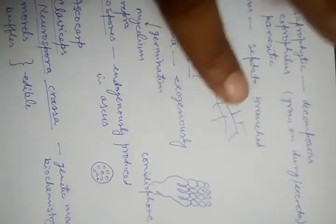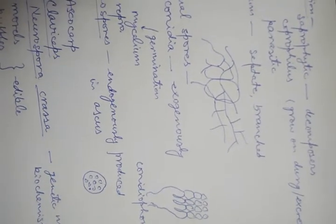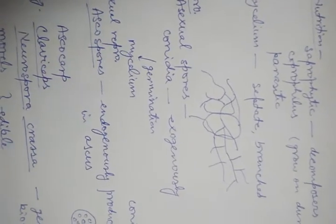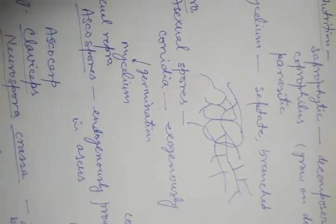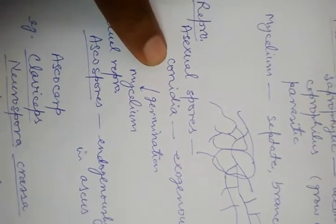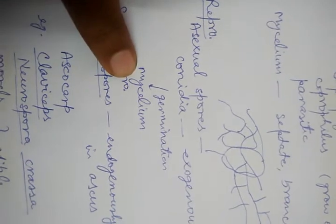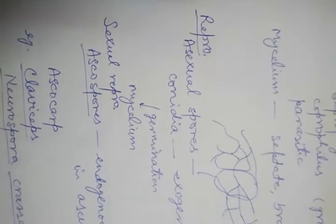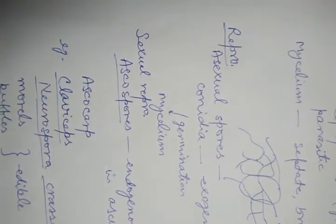These conidiospores are produced on the fruiting body conidiophore, which develops on the mycelium. Once released, they disperse by water or air currents to distant places. After germination, each conidiospore gives rise to the parental body — the septate branched mycelium. So conidiospores are produced in Ascomycetes, while aplanospores are produced in Phycomycetes.